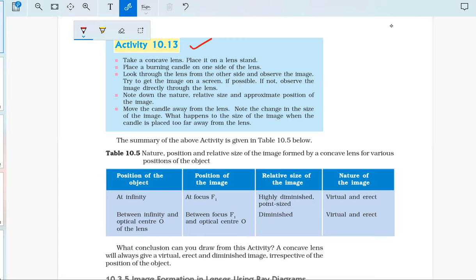A burning candle placed on one side of the concave lens acts as an object. When we look through the lens from the other side, we observe an erect, virtual, and smaller image from the same side of the lens as the candle.